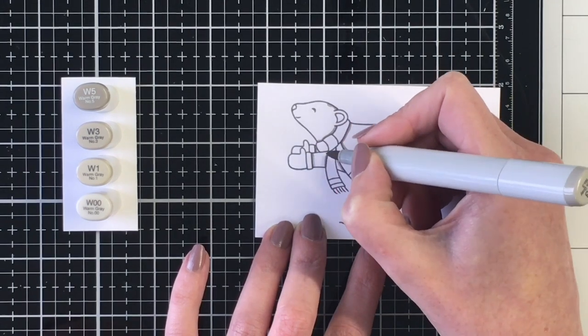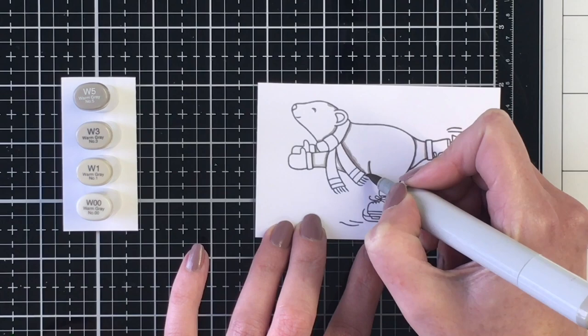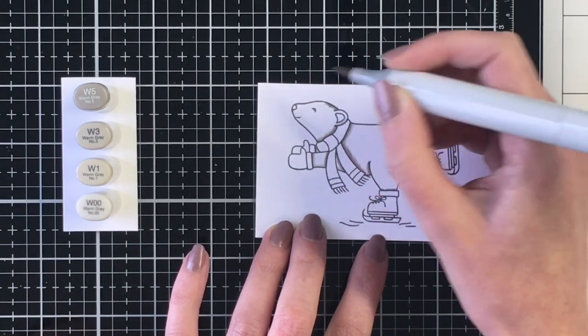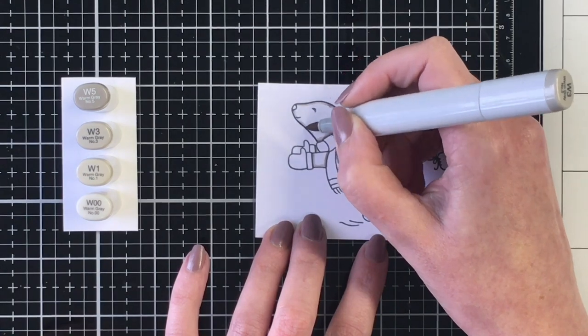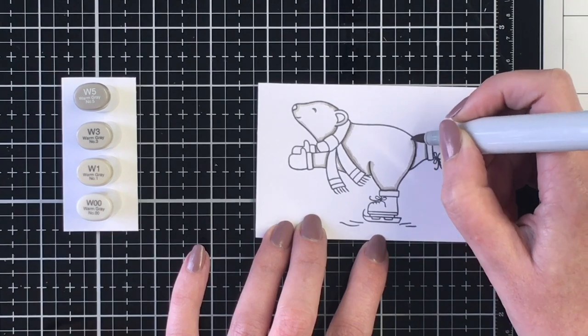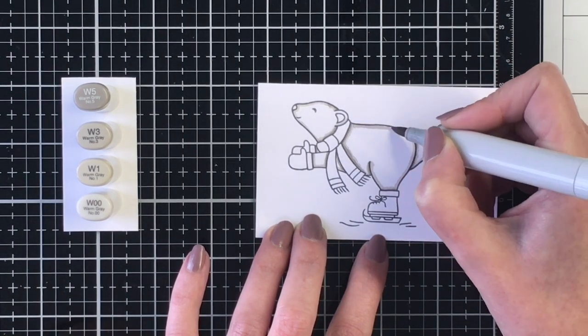So we're going to start by coloring him up and I wanted to use some warm gray. So I'm using a four color blend here, going all the way from my darkest color, the W5, to the W3, W1, and the W00 as my lightest.